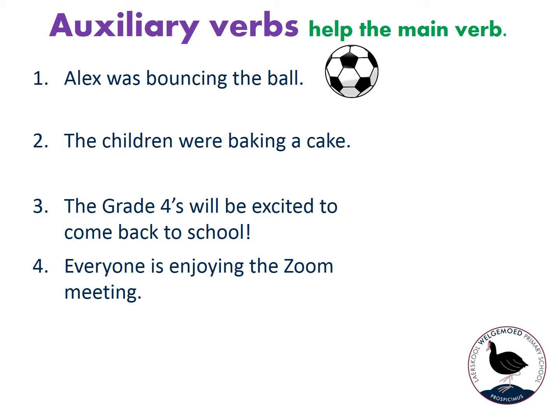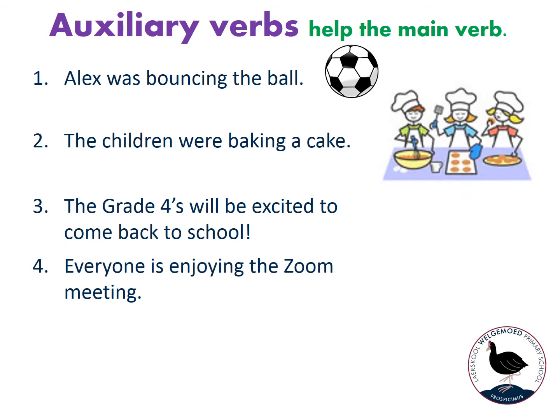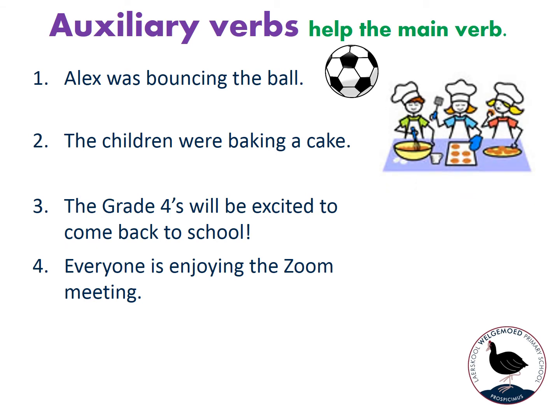Let's look at sentence number two: 'The children were baking a cake.' If we leave out 'were' and just have 'the children baking a cake', it doesn't really sound correct. So we need the auxiliary verb 'were' to help the main verb 'baking'. We have 'were' as the auxiliary verb and 'baking' as the main verb, and now it makes sense.